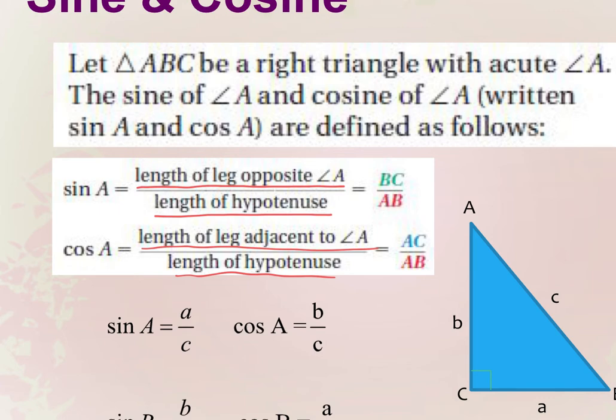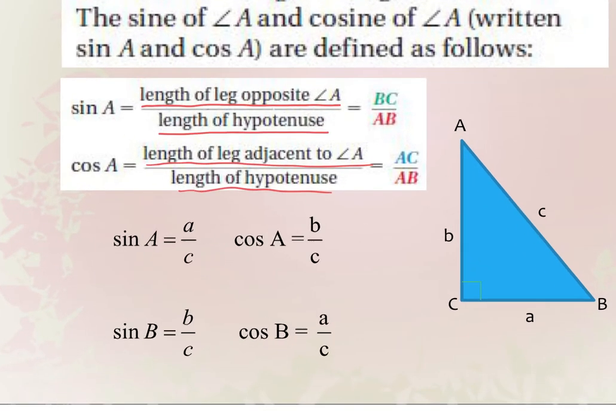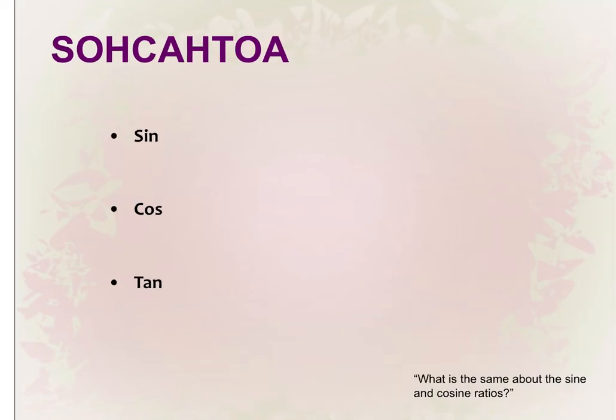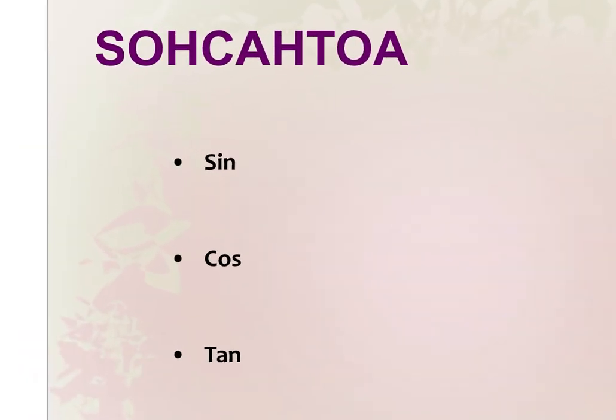What is tangent? Opposite leg over the adjacent leg. Now there is a cool little acronym to memorize this. There's something called SOH-CAH-TOA. SOH-CAH-TOA. Do we all understand where the sine of A, cosine of A, sine of B, and cosine of B are coming from? There's something called SOH-CAH-TOA.